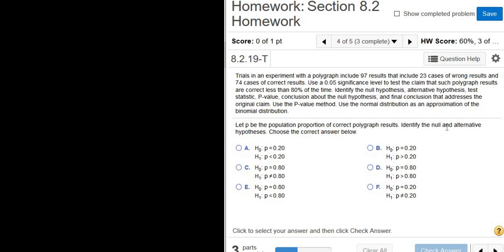Trials in an experiment with a polygraph, so a polygraph is a lie detector test, include 97 results that include 23 cases of wrong results and 74 cases of correct results. So this is a bit tricky. Our total here, the total number of observations, is 97.